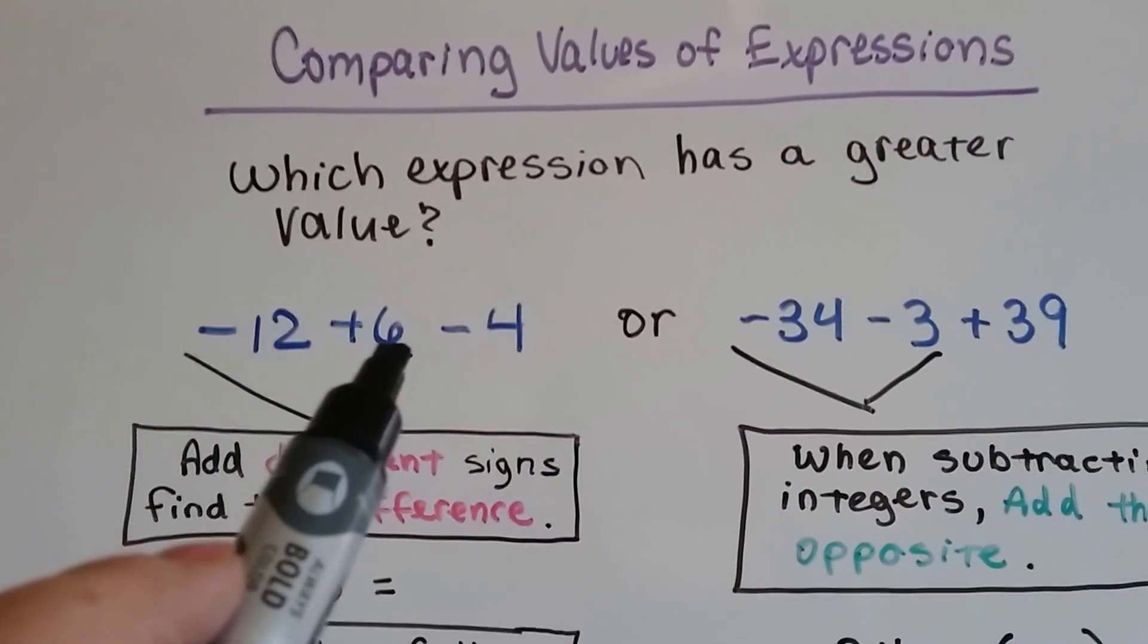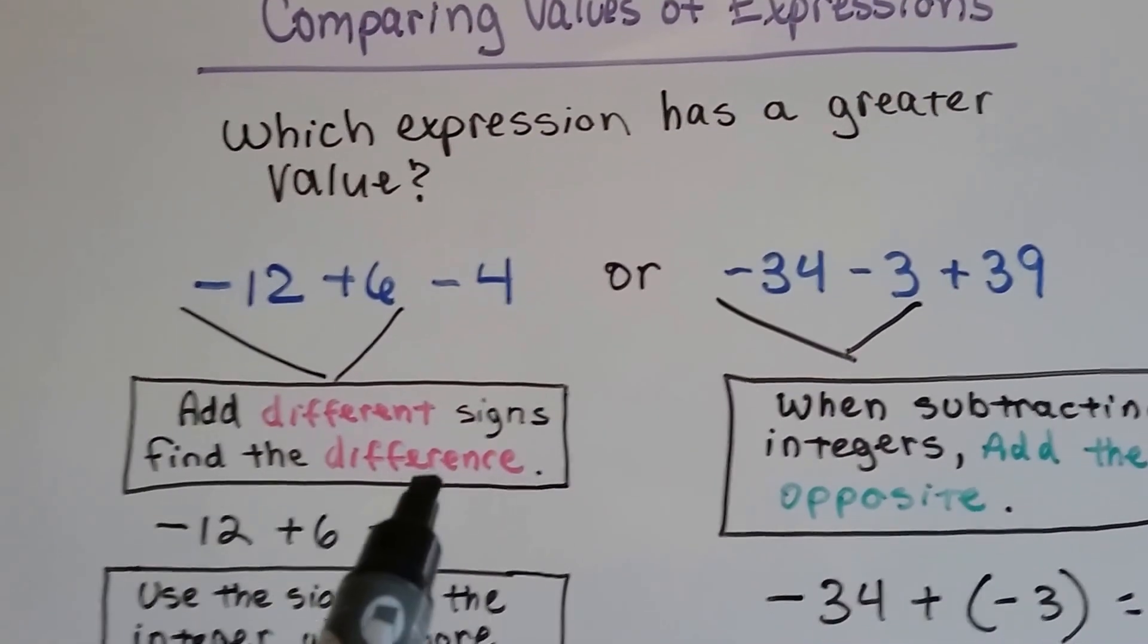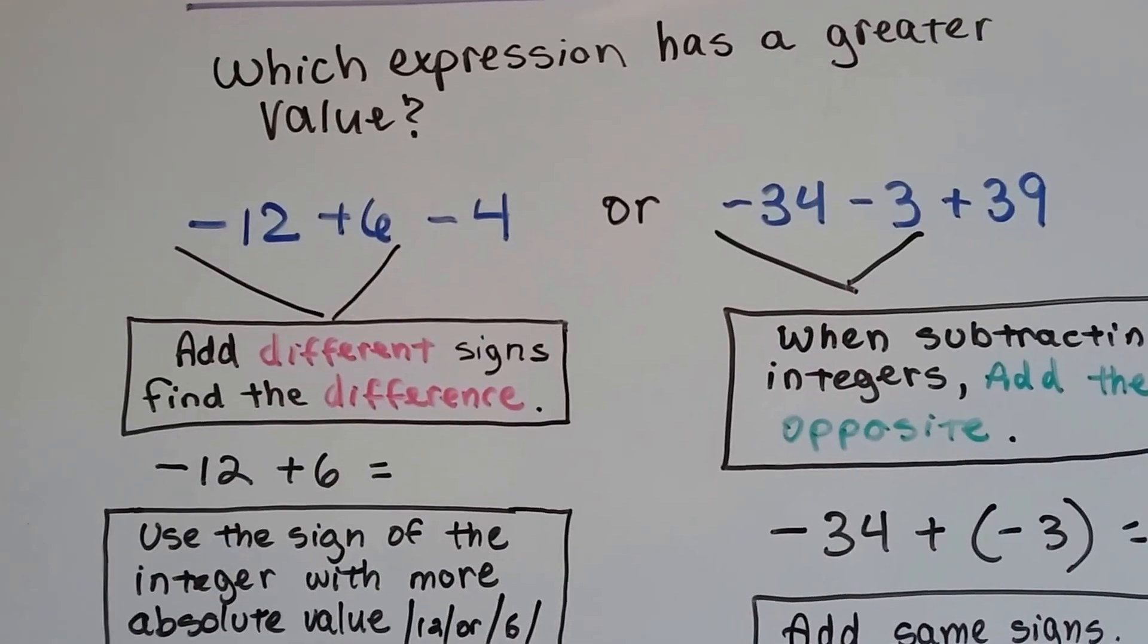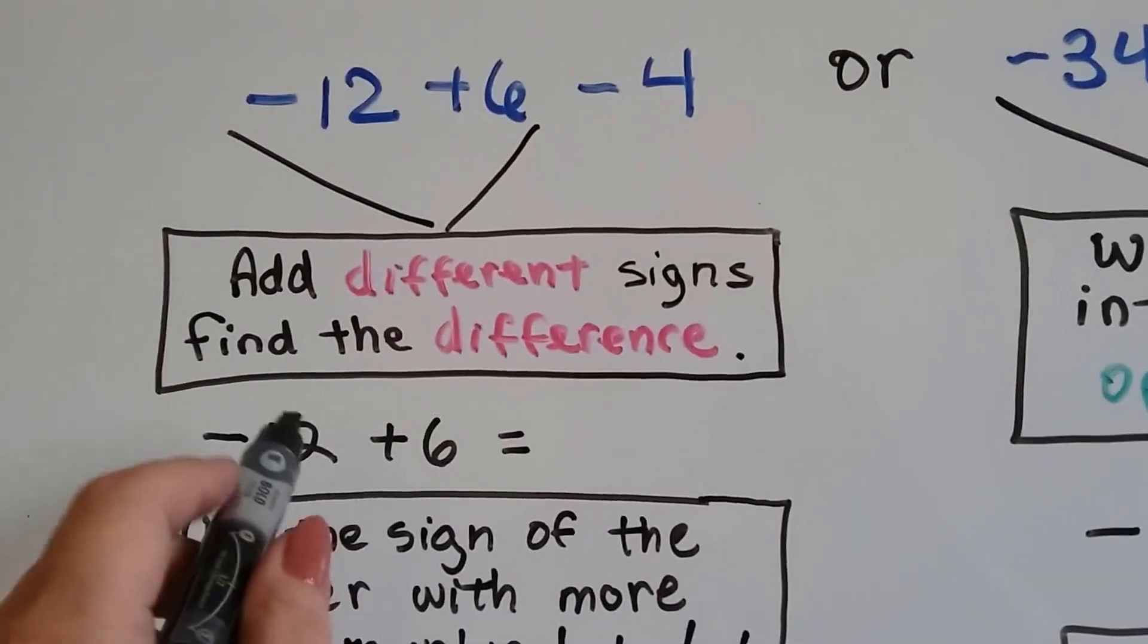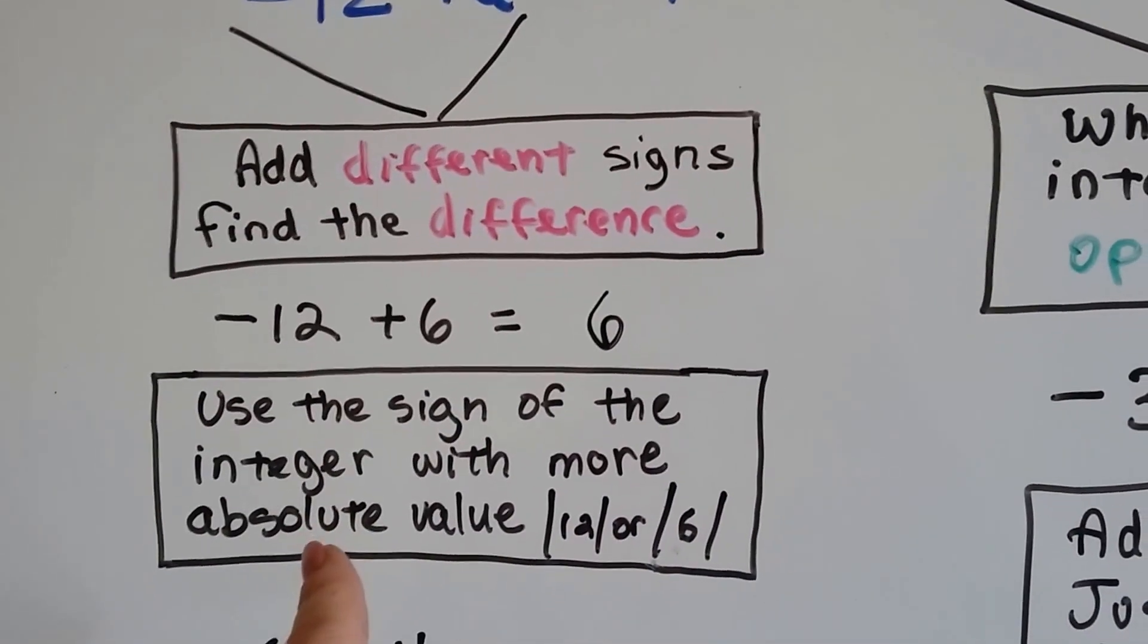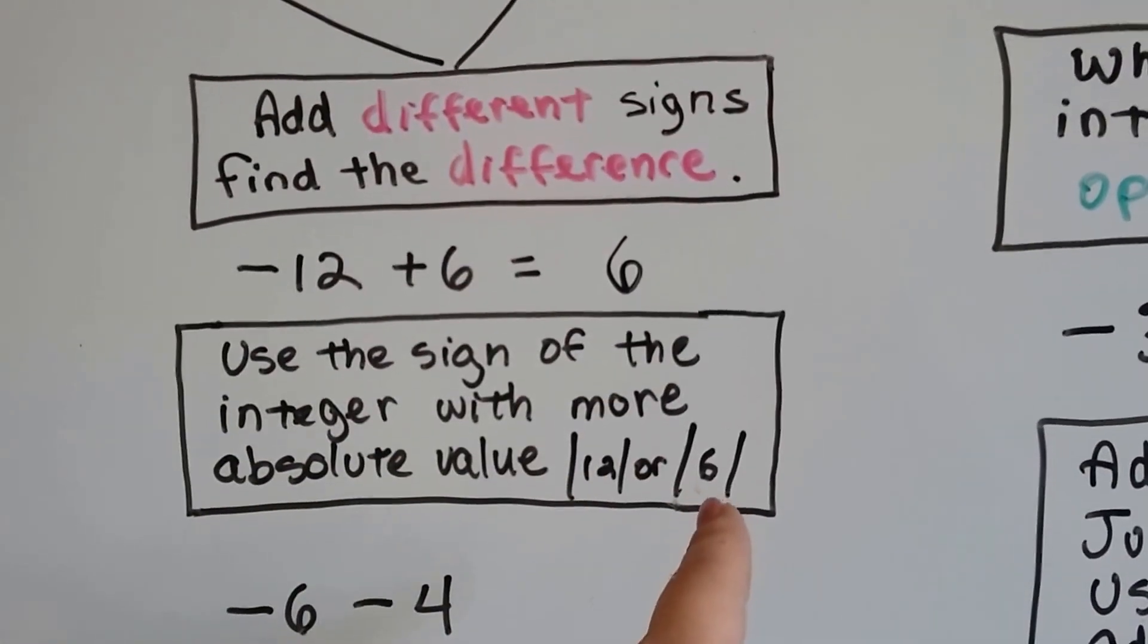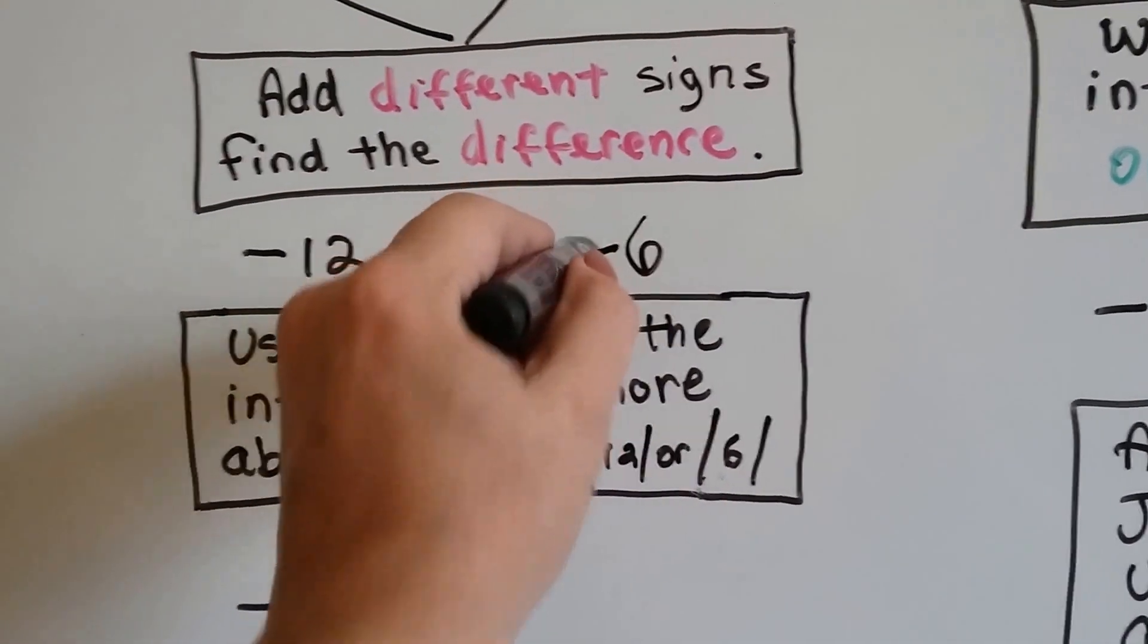We've got a negative 12 and a positive 6, and these are different signs. And because we're adding, we're going to find the difference. Different difference. So, negative 12 and a positive 6, the difference between 12 and 6 is what? What's the difference? That means subtraction. Well, 12 take away 6 is 6. Now, we use the sign of the integer with more absolute value. The absolute value of negative 12 is 12, and the absolute value of 6 is 6. 12 is bigger. It's got a negative sign. So, our answer is a negative 6.